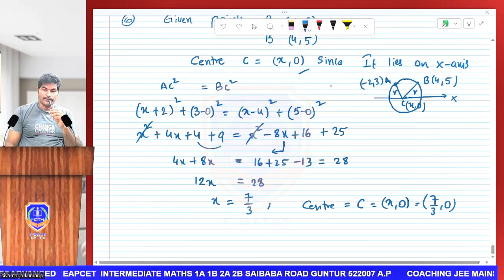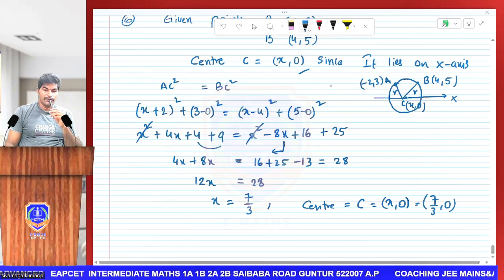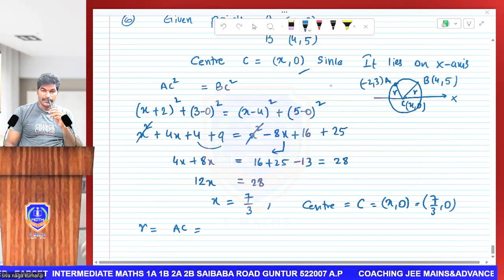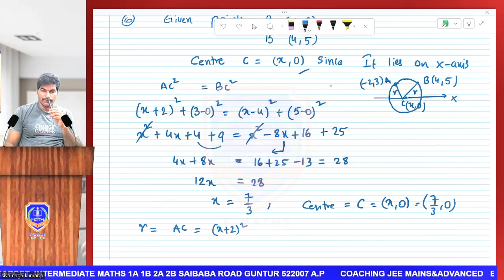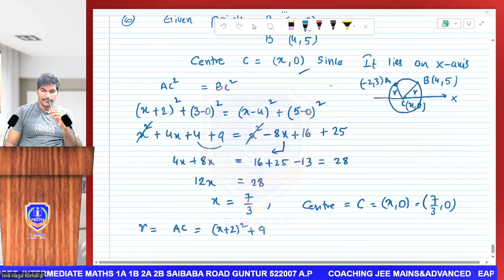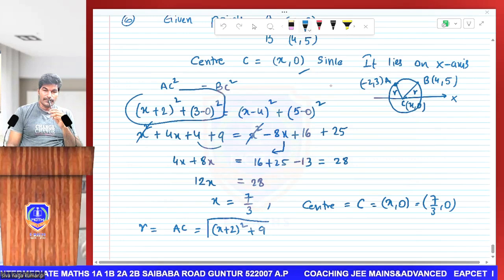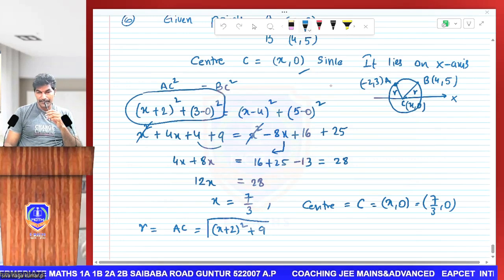This point is the center. Radius is AC. AC, (x + 2)² + 3² = 9. AC², square root. x value is 7/3.